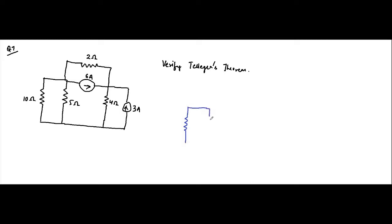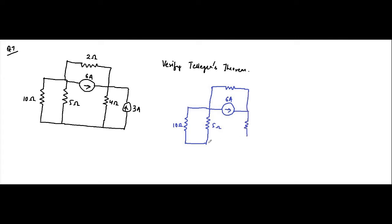The circuit has a 10 ohm resistor, a 5 ohm resistor, a 6 ampere current source, a 10 ohm resistor, a 5 ohm resistor, a 4 ohm resistor, a 4 ohm resistor, and a 3 ampere current source.